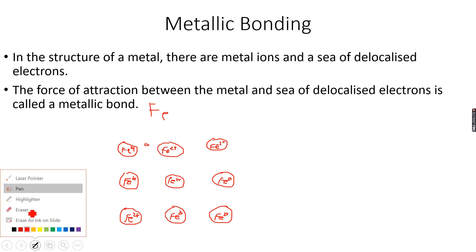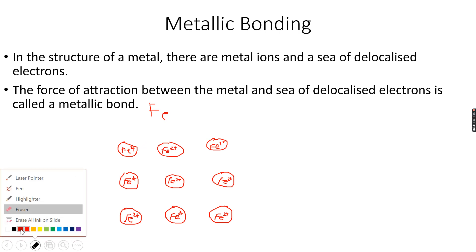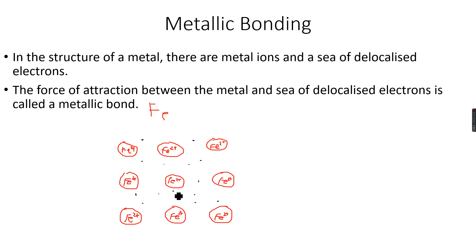We need to make dots to represent these electrons. I'll use black — black is a good color. Just randomly place them anywhere. You need to make 18 dots in total to represent the 18 delocalized electrons.